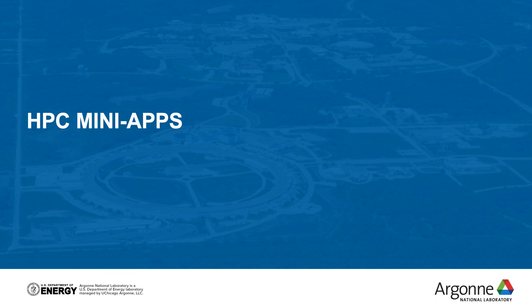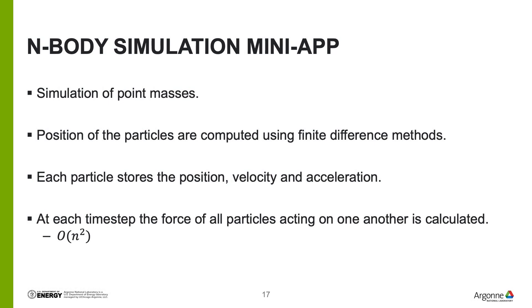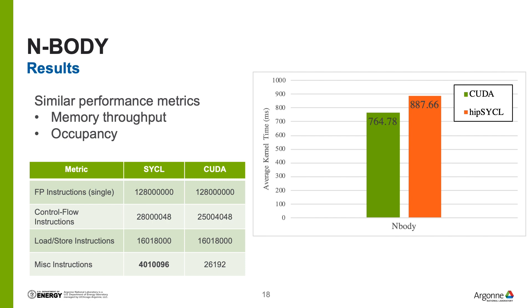The performance from the Raja Performance Suite gave us confidence to do more in-depth performance analysis of several HPC mini-apps. The first is an N-body simulation mini-app, which is the simulation of point masses. The positions of the particles are computed using finite difference methods, and each particle stores its position, velocity, and acceleration. At each time step, the force of all particles acting on one another is calculated in an O(N²) fashion. The results shown here display average kernel time from NVProf — lower is better — and we see that CUDA performance is better than HIP-SYCL for this mini-app.